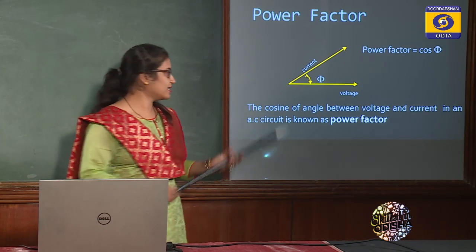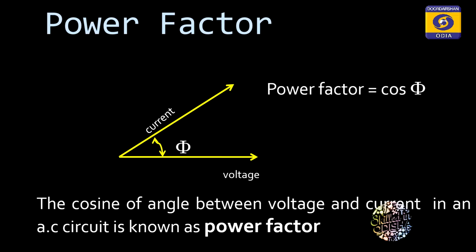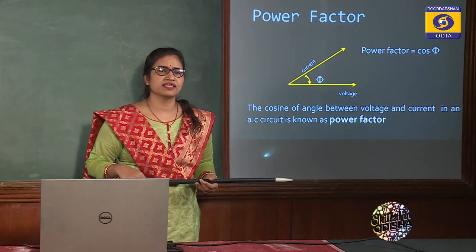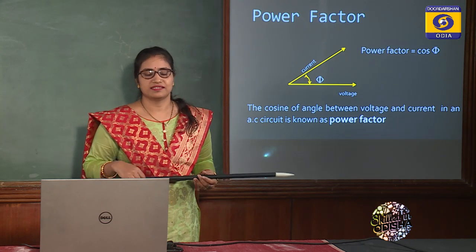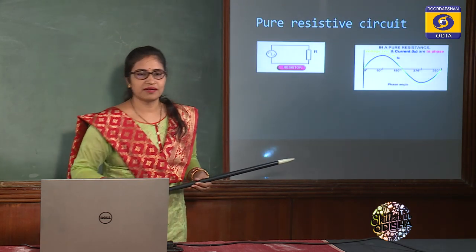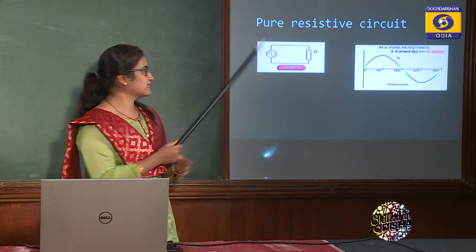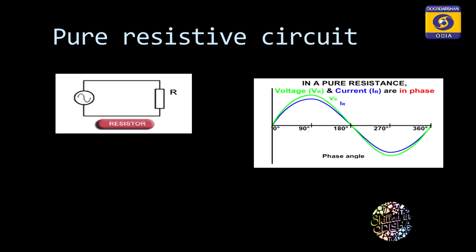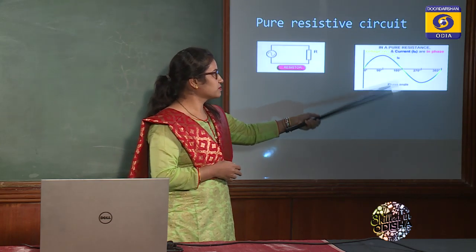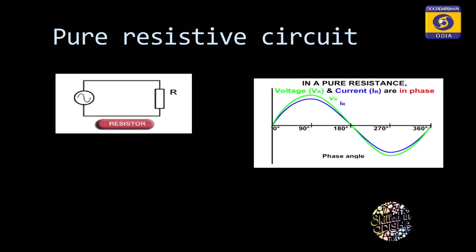You should have knowledge of the different loads in AC circuits. Basically, there are three types of loads: resistors, inductors, and capacitors. Let's see one by one what happens to resistive circuits, inductive circuits, and capacitive circuits. First, pure resistive circuits. Suppose we have a circuit that contains an AC source and a resistive load.